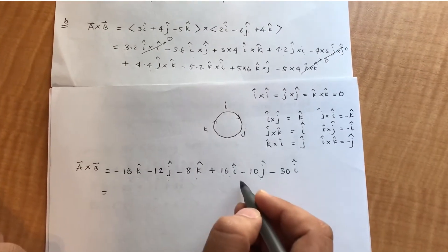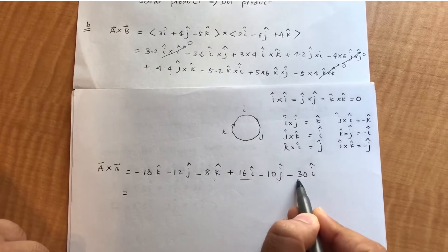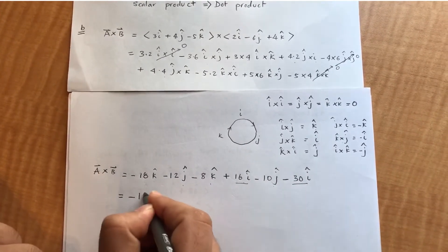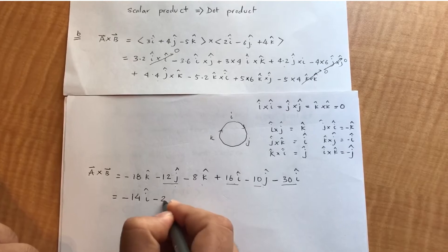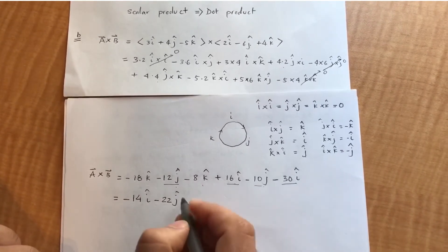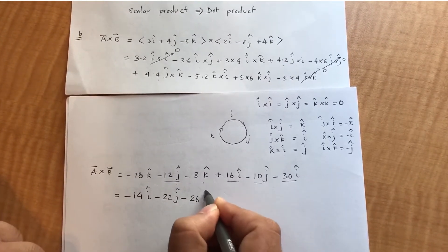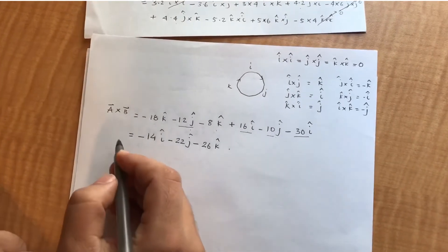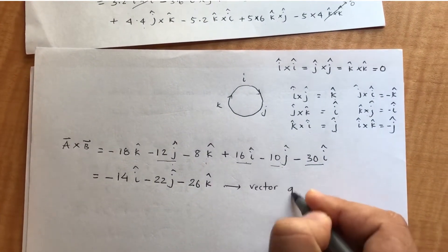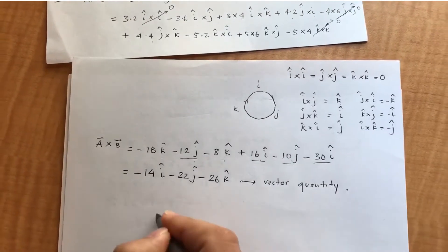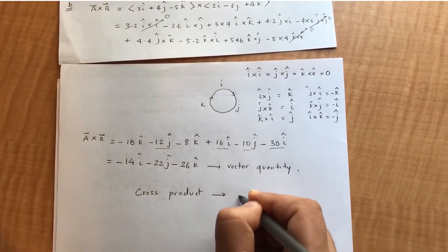Collecting like terms: the i components give 16i − 30i = −14i; the j components give −12j − 10j = −22j; and the k components give −18k + 8k = −26k. So a cross b = −14i − 22j − 26k. This is a vector quantity, which is why the cross product is called the vector product.